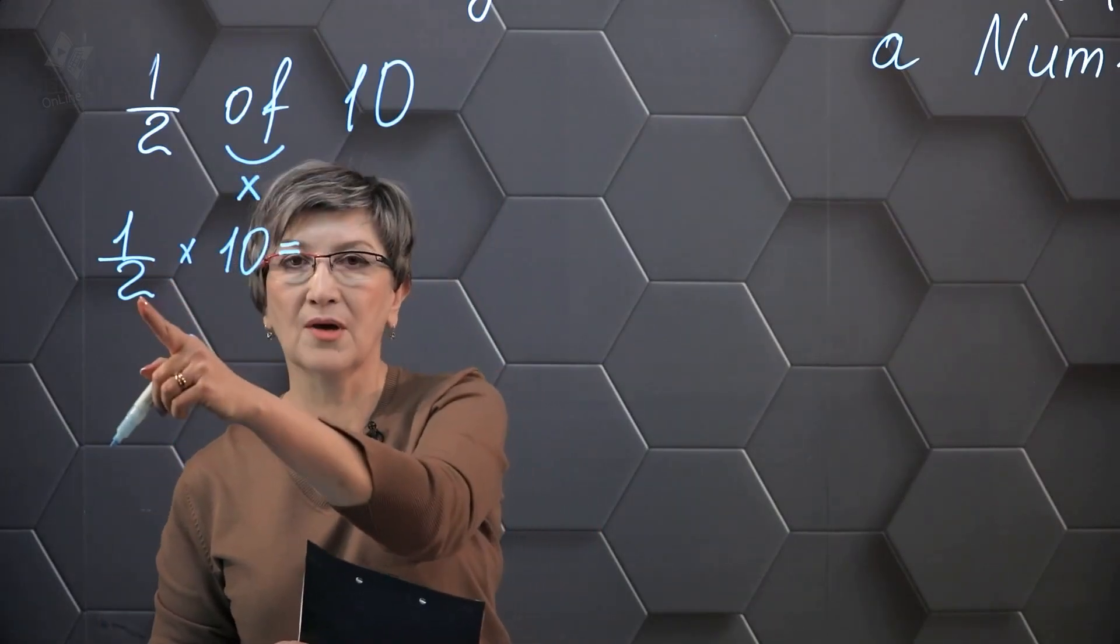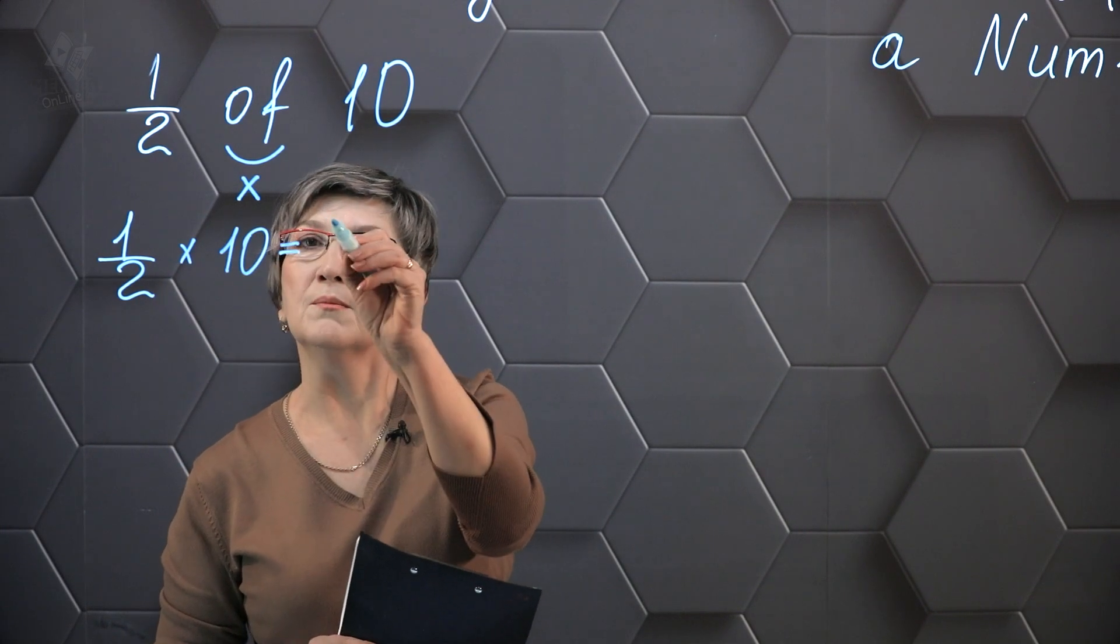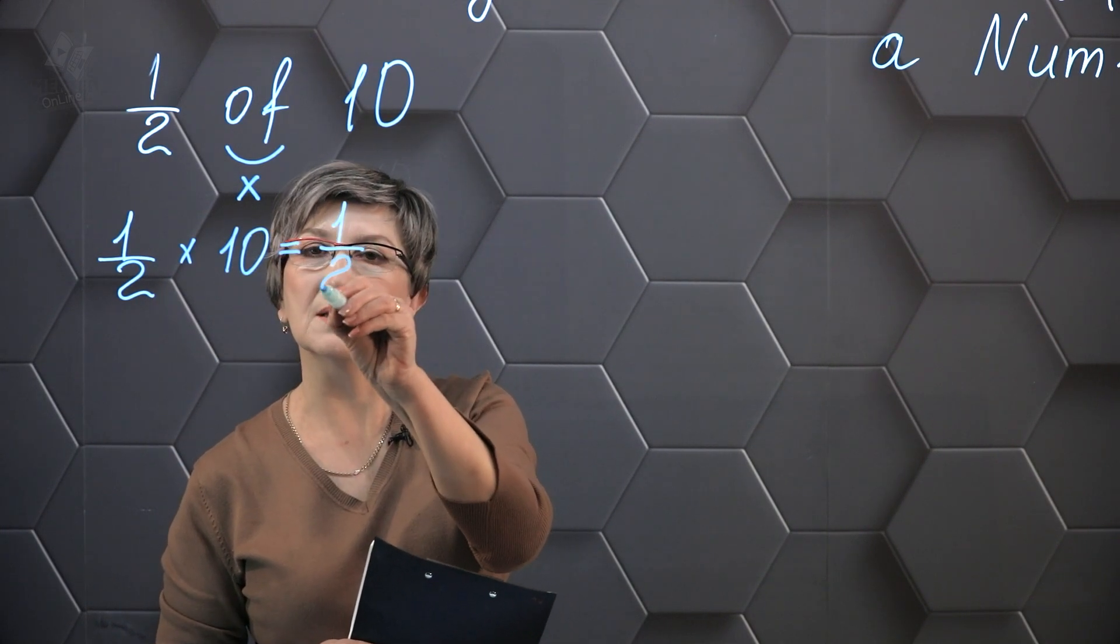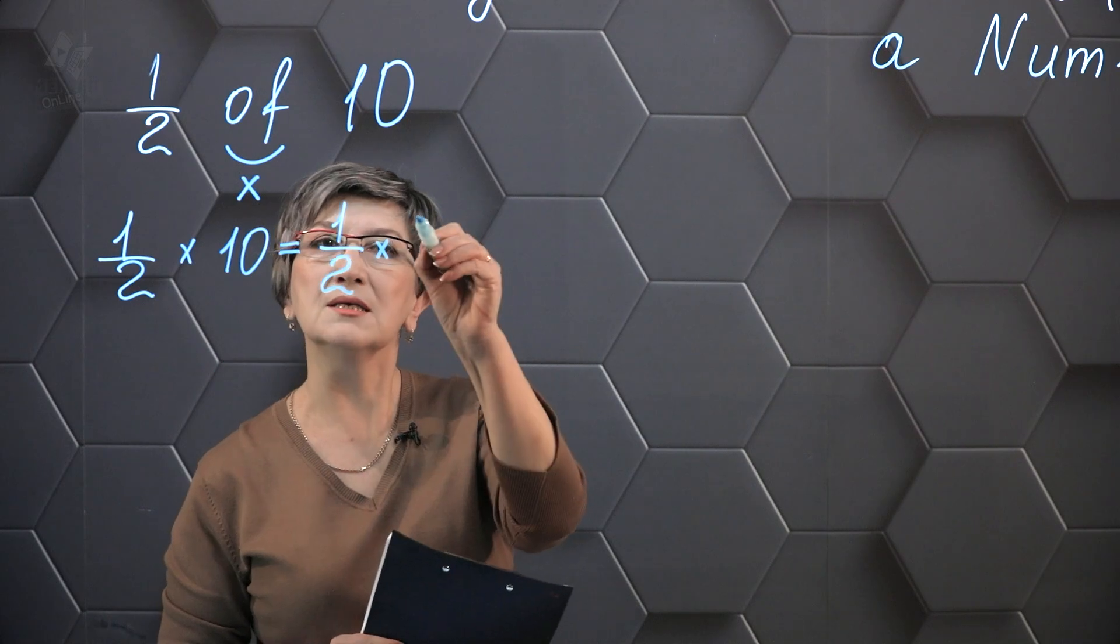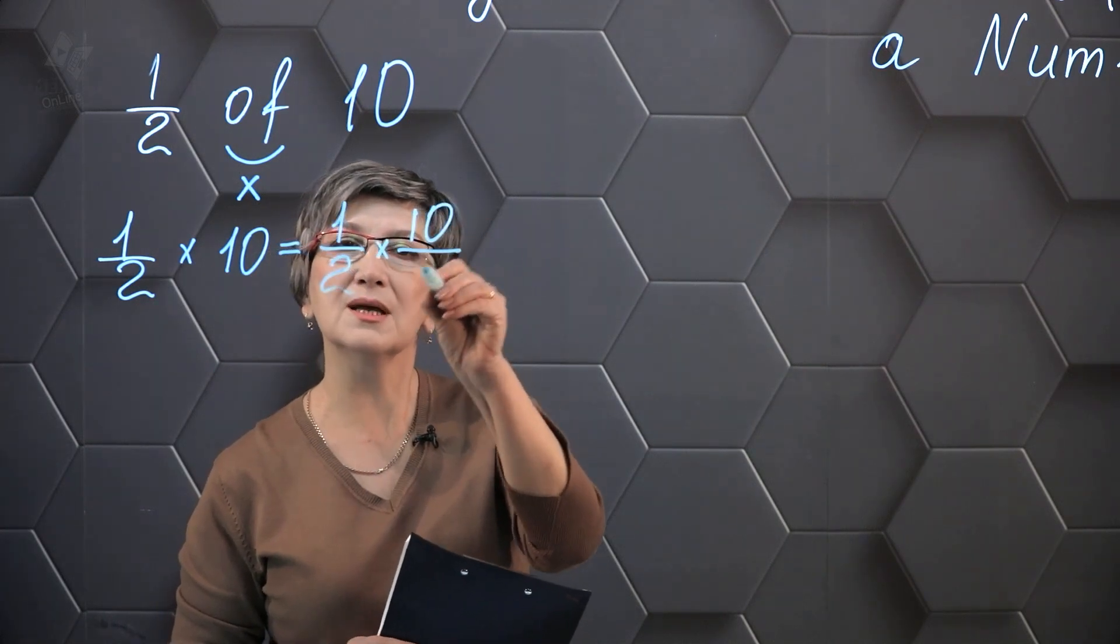In order to multiply a fraction by a number, I need to write down one-half, perform the multiplication, and then write down 10 as 10 over 1 to complete the calculation accurately.